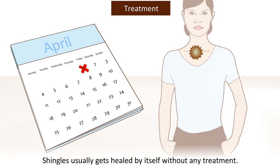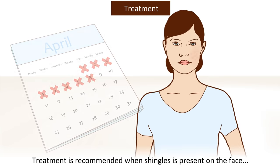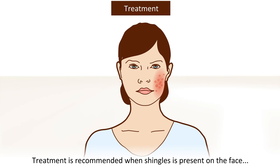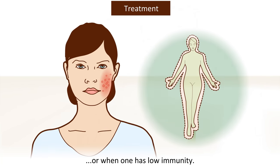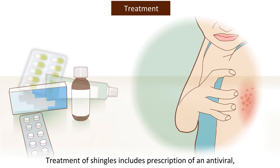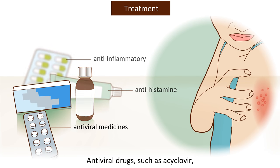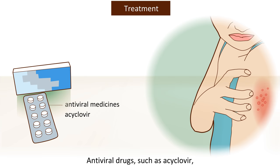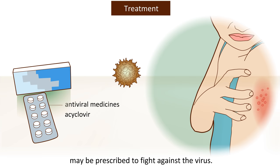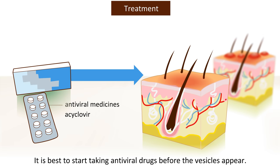Shingles usually gets healed by itself without any treatment. Treatment is recommended when shingles is present on the face or when one has low immunity. Treatment of shingles includes prescription of antiviral, anti-inflammatory, and antihistamine medicines. Antiviral drugs such as acyclovir may be prescribed to fight against the virus. It is best to start taking antiviral drugs before the vesicles appear.